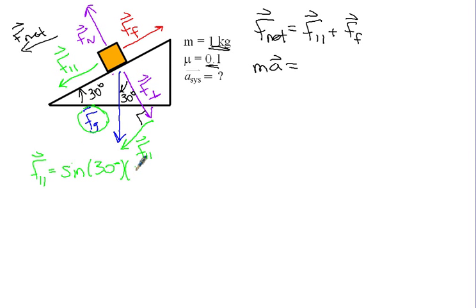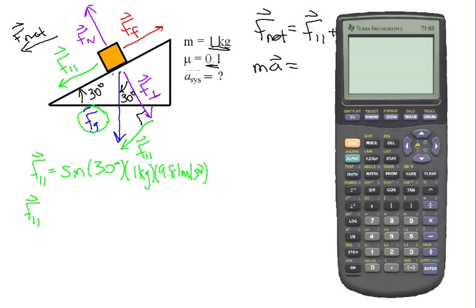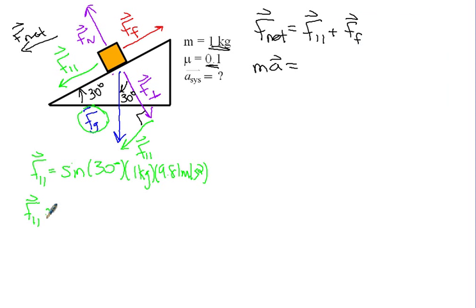Sine of 30 degrees times the hypotenuse, which in this case is the force of gravity. And I can calculate that force of gravity pretty easily. It's 1 kilogram times 9.81 meters per second squared. All we're doing there is just Newton's second law, mass times acceleration due to gravity. I can run that through my calculator. Sine of 30 times 1 times 9.81. So 4.905 Newtons. That's going to be my force parallel, 4.905 Newtons.